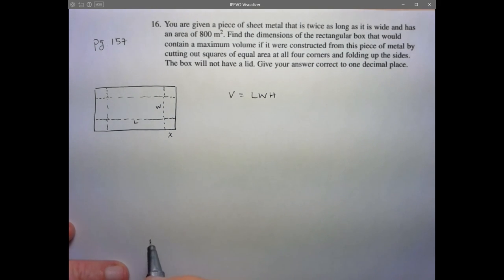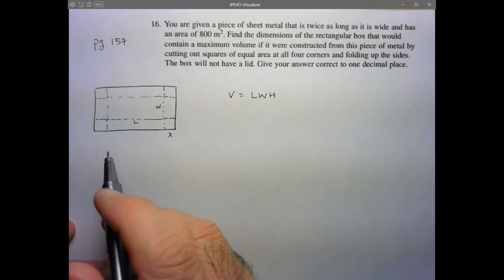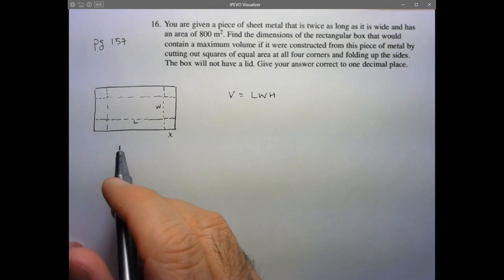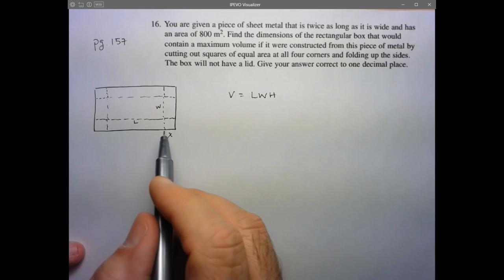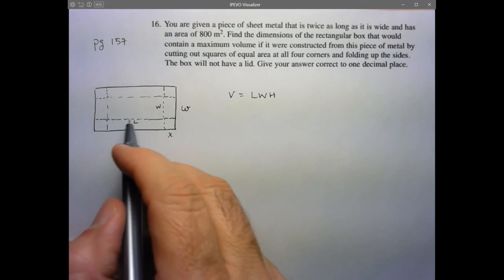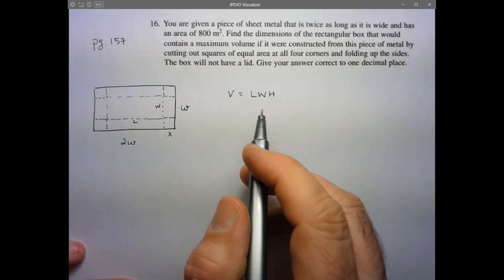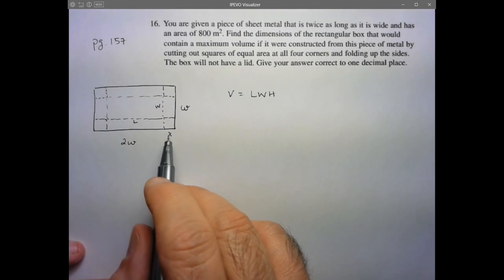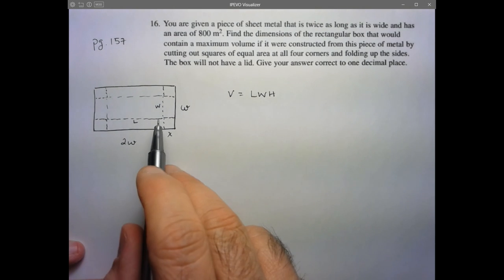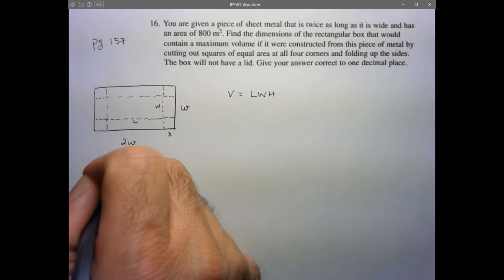The question we would have solved in the past would have actually given us some specific dimensions for the sheet of paper. Here they don't give us a specific dimension. But I do know that the length of the sheet of metal is twice as long as it is wide. So here maybe I'll use lowercase w to distinguish it from the width of the box that's created. And so this is going to be 2w. I'm seeing a bit of a problem because I've got three variables here. Let's see if we can use this area here. I know that 800 represents the area of the sheet.